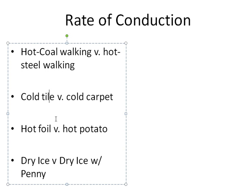Hot foil versus hot potato: if you wrap a potato in foil and put it in the oven, they'll be the same temperature when you take them out. But the foil will conduct the heat away from itself very rapidly — you can touch the foil within seconds of removing it and it seems like room temperature, partly because of its low mass but also because it's very effective at conducting heat. The hot potato, on the other hand, is a worse conductor, so it doesn't cool down nearly as effectively — sticking your finger inside it a couple of seconds after removing it from the oven can burn you severely.